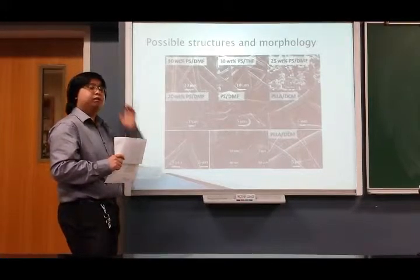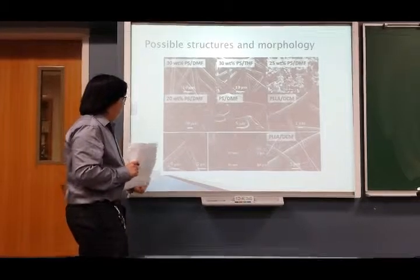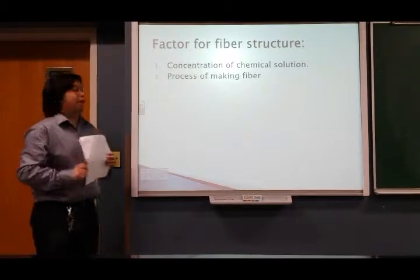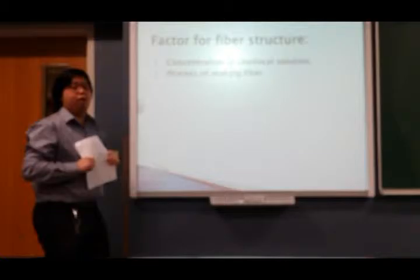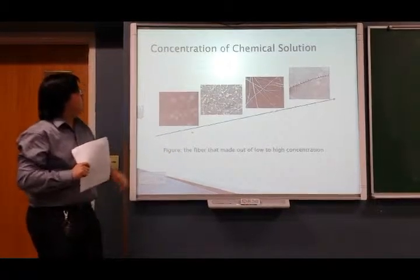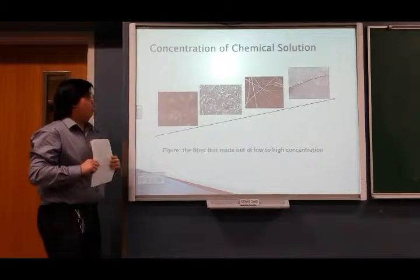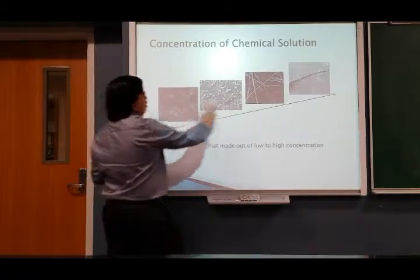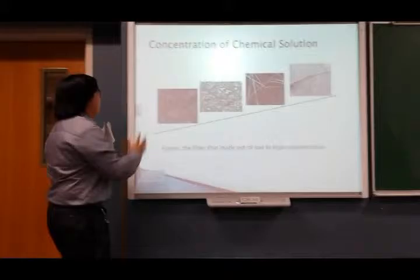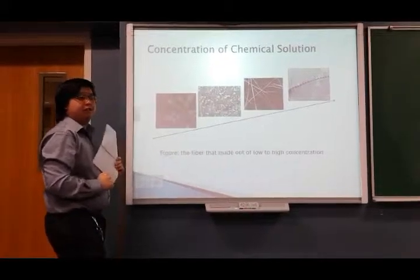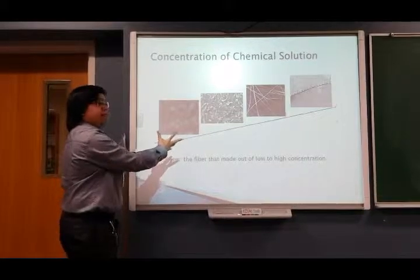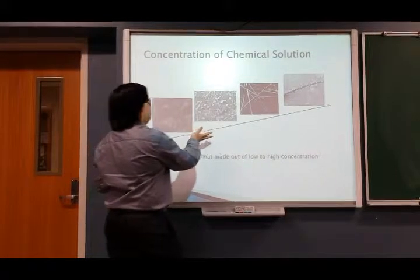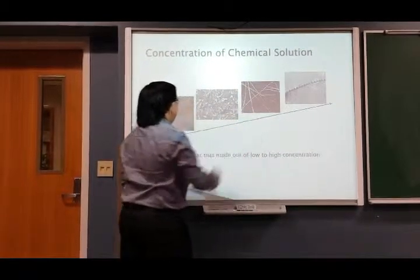Besides the randomized forming structure, other factors can also affect the forming of the fiber, such as the concentration of the chemical solution and the process when making the fiber. Regarding concentration: low concentration will not give us a fiber shape but rather a more molecular shape, and fiber cannot be formed. As we increase the concentration, fibers will be formed and they become thicker.